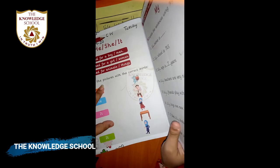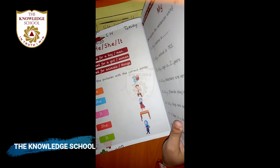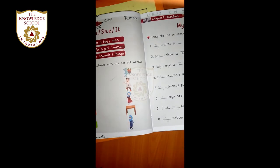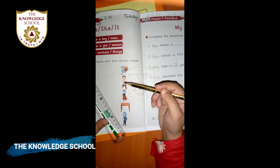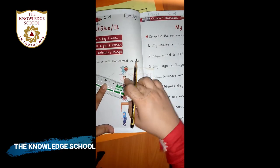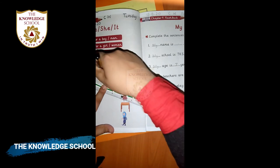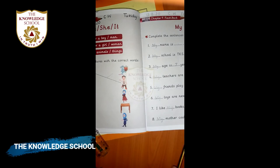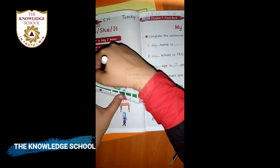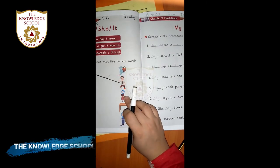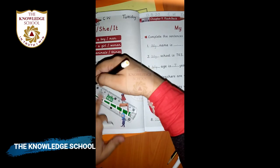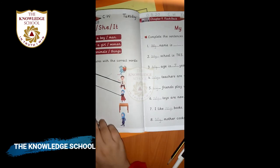The question is: match the pictures with the correct words — He, She, It. First one: he is used for a boy or man, so we match 'he' with the man. Second word: she is used for a girl or woman, so we match 'she' with the girl. Let me mark it with the marker.